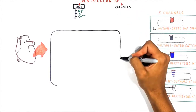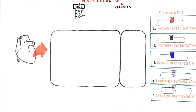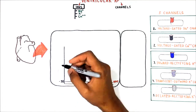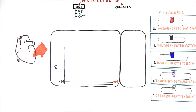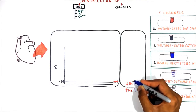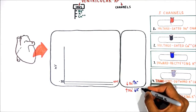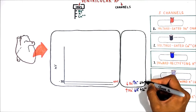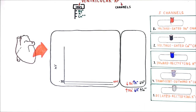And the delayed rectifying potassium channel, IK channel. In order to better understand ventricular action potential, let me draw two cells from the ventricle. It is very important to note that atrial and ventricular muscle cells have a stable resting membrane potential of about minus 90 millivolts. In the interstitial fluid, we have a high amount of sodium compared to intracellular fluid, but potassium is the opposite. Calcium concentration is also higher outside the cell than inside.